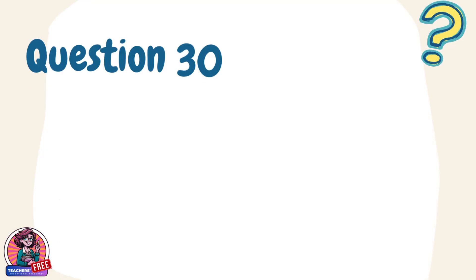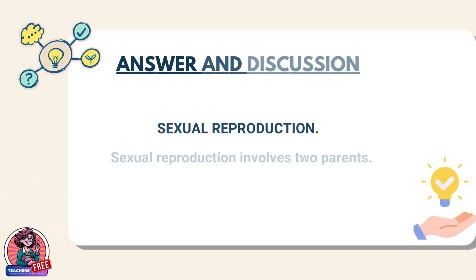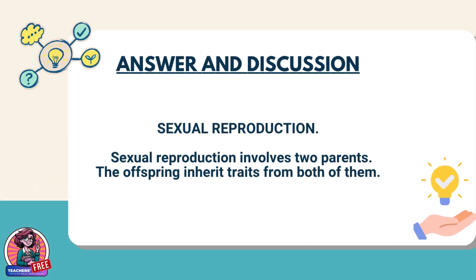Question 30. What kind of reproduction happens when offspring resemble their parents? Answer: Sexual reproduction. Sexual reproduction involves two parents. The offspring inherit traits from both of them.